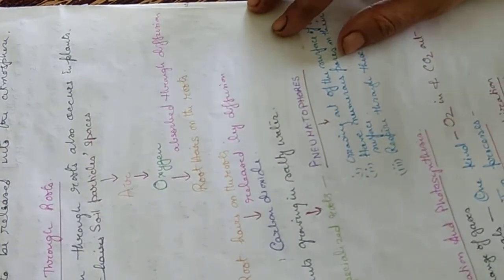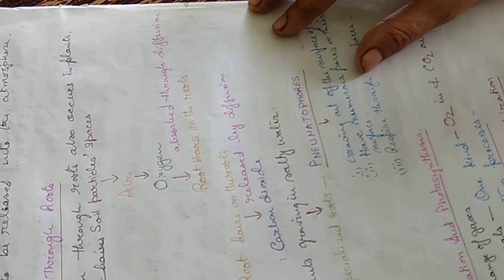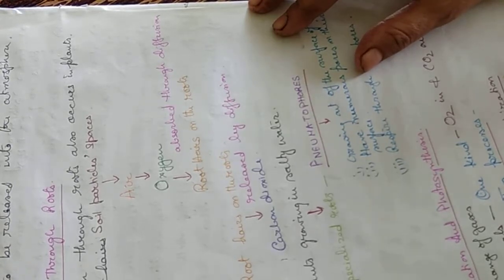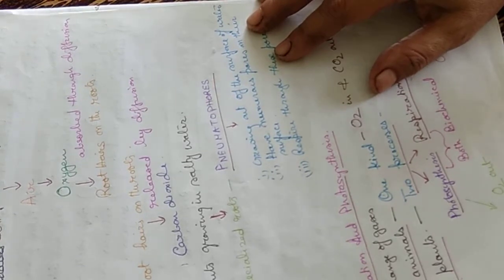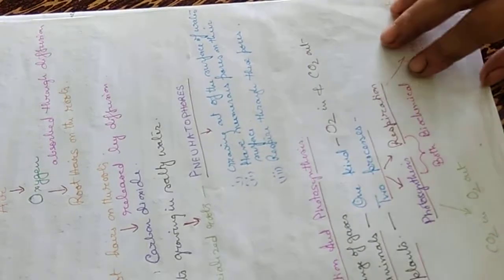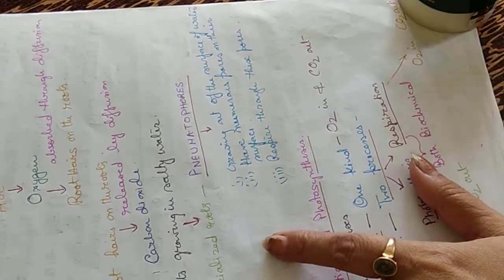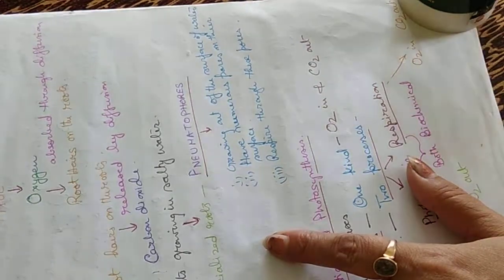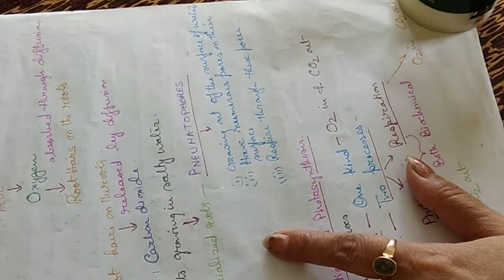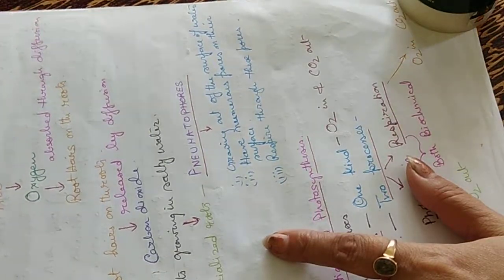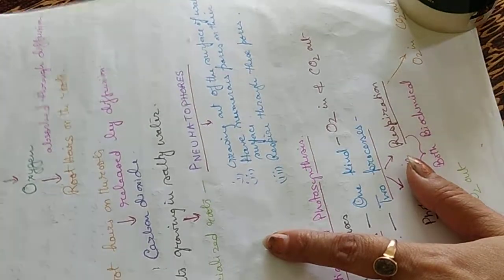Respiration through roots also occurs in plants. Soil particles are loosely packed and have air spaces containing oxygen. This oxygen is absorbed by root hairs present on the roots by diffusion, and root hairs also release carbon dioxide by diffusion. Plants growing in salty water cannot breathe normally, so they have specialized roots called pneumatophores which come out of the soil, grow above the water surface, have numerous pores, and respire through these pores.